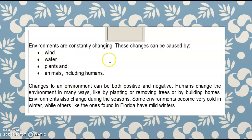Environments are constantly changing. These changes can be caused by wind, water, plants, and animals, including humans. Changes to an environment can be both positive and negative. Humans change the environment in many ways, like by planting or removing trees or by building homes. Environments also change during the seasons. Some environments become very cold in winter, while others, like the ones found in Florida, have mild winters.